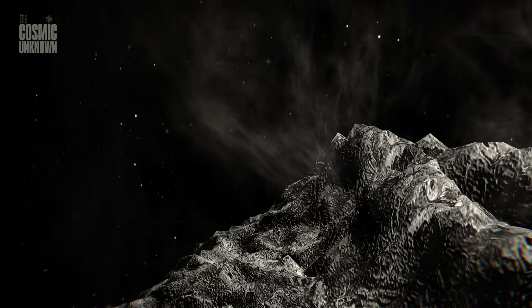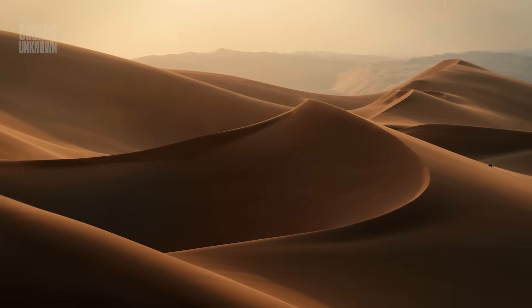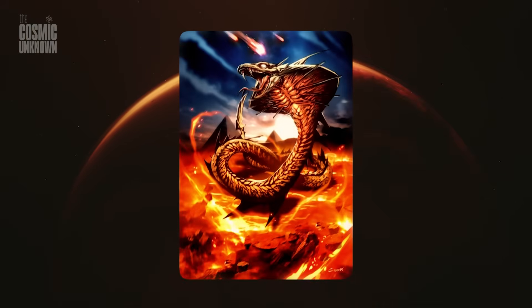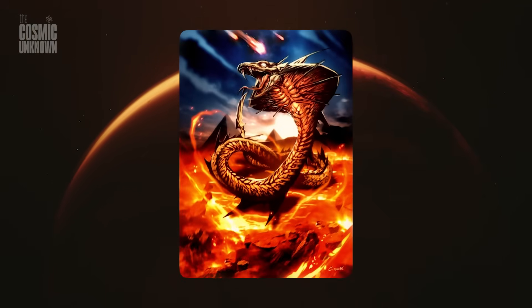April 13th, 2029. It has a name. Apophis. In ancient Egyptian myth, it was the serpent of chaos. The eternal enemy of the sun.